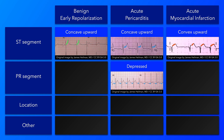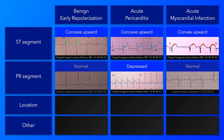Widespread PR segment depression is a classic sign of acute pericarditis. With the other two conditions, however, the PR segment is normal.